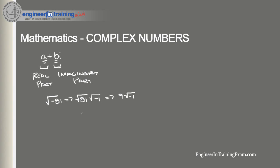Many mathematicians came up with the following definition: the square root of negative 1 is equal to i, and i squared is equal to negative 1. This gives us the ability to write the square root of negative 81 as 9i. This illustrates how we can get the imaginary part of a complex number.